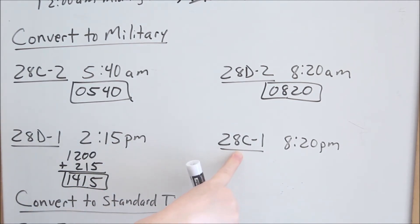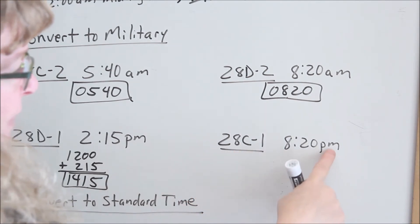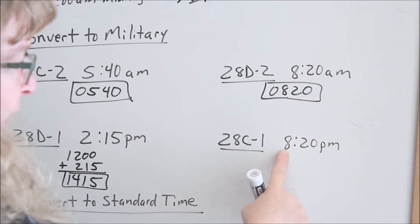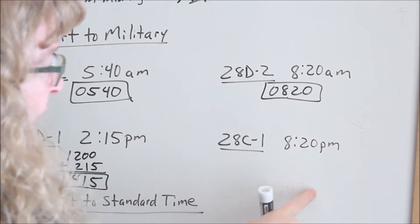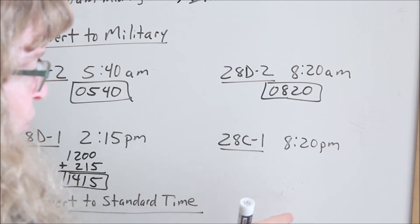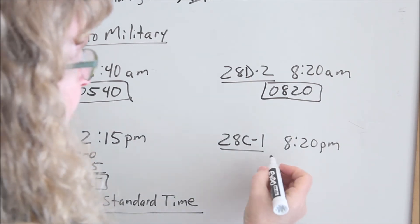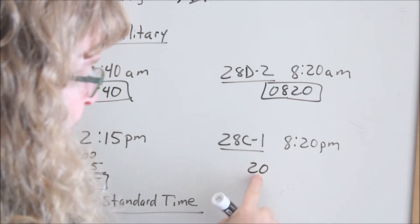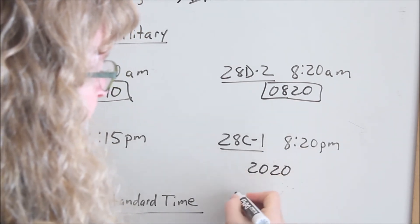Looking at 8:20 p.m. — we are 8 hours after noon, 8 hours after 12 o'clock. So for 8 hours past 12, we take 12 plus 8, which is 20. That's the 20th hour of the day, plus our 20 minutes — so 2020.